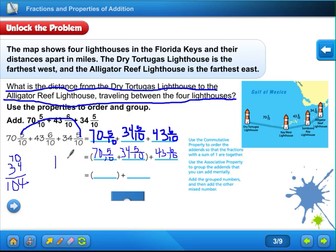104. Don't forget, you have to add this 1 right here. So, now we have 104 plus the 1 is 105. Now we still have to add this. 43 and 6 tenths.